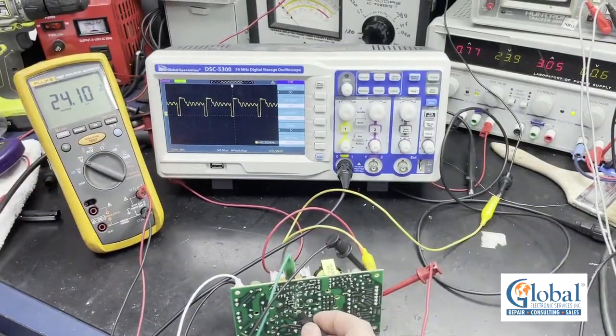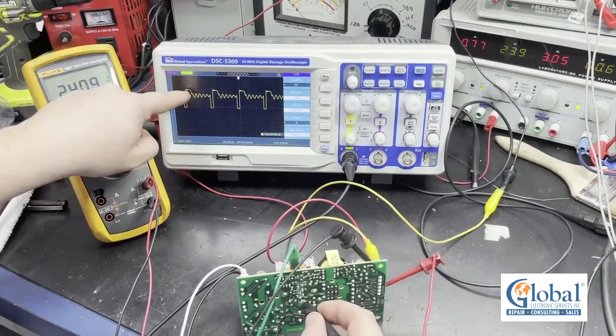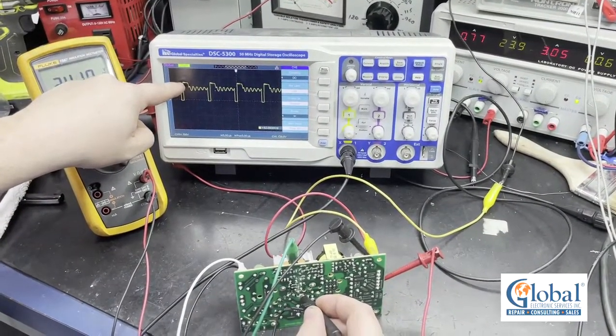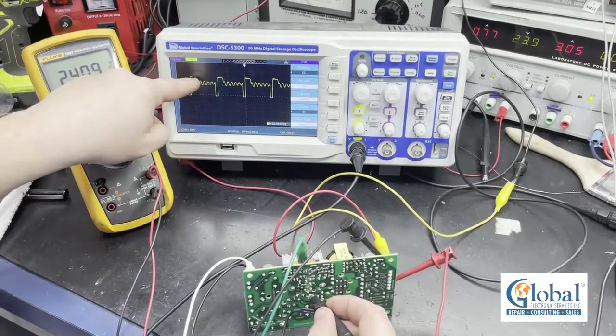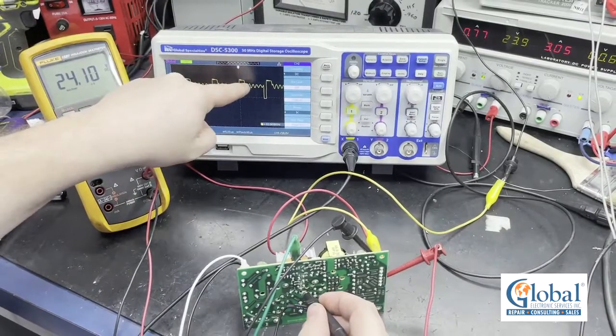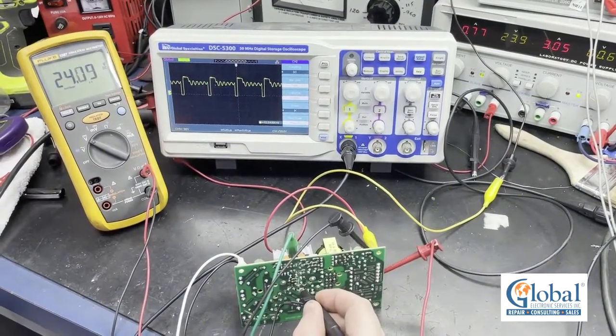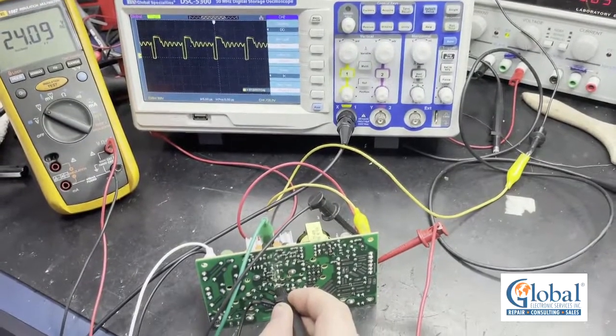This is a nice waveform. The width of each peak represents the time that the IC is on. And we expect to see it get larger with load increase because the circuit will need to be on longer time periods to maintain the correct voltage. We will go ahead and increase the load to an amp.